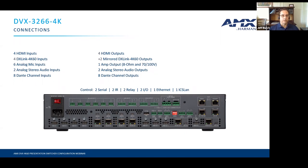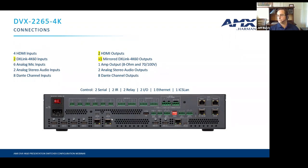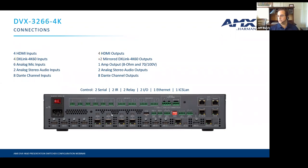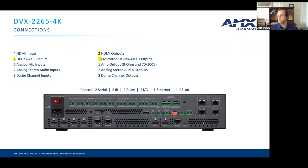The 2265 model is very similar. The only difference is it has fewer DX Link inputs and fewer video outputs — two HDMI outputs instead of four, with one of those mirrored to a DX Link output.